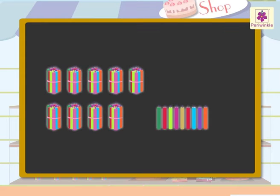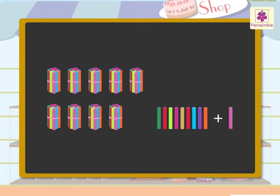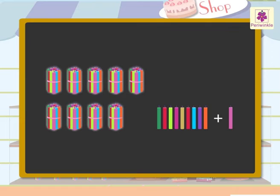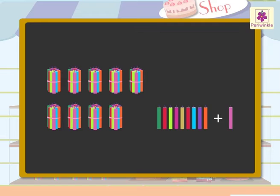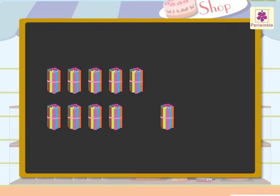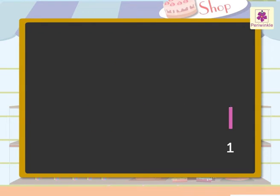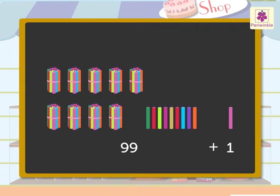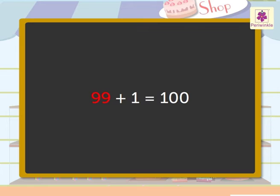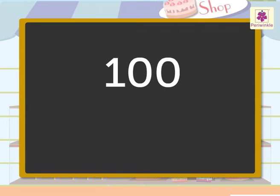When one is added to nine tens and nine ones, we get ten tens. Ten tens mean one hundred candles. So when one candle is added to 99 we get 100 candles. That is, when we add one to 99 we get 100. It is written as one zero zero and it is read as one hundred.